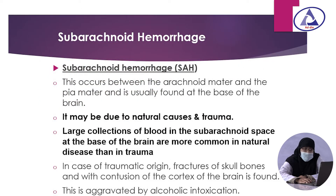Subarachnoid hemorrhage occurs between the arachnoid matter and the pia mater, and is usually found at the base of the brain or base of the skull. It may be due to natural causes and also sometimes traumatic. Larger collections of blood in the subarachnoid space at the base of the brain are more common in natural disease than trauma. In traumatic origin, fracture of skull bones with contusion of the cortex of the brain is found, and it is aggravated by alcoholic intoxication.